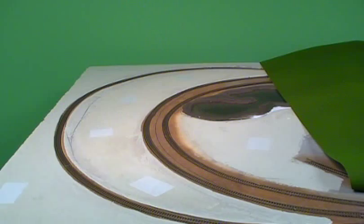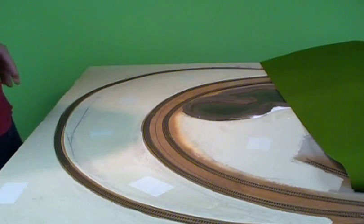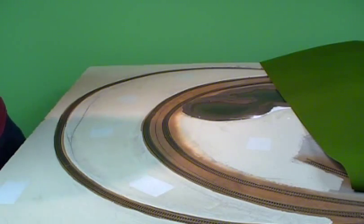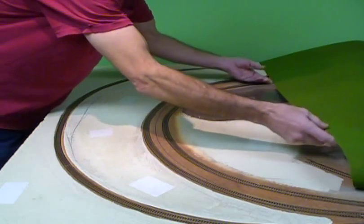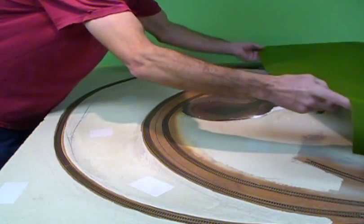All right, getting ready to do scenery on this end of the layout. Picked up a sheet of Woodland Scenics grass mat. This is good for covering a large area at one time.